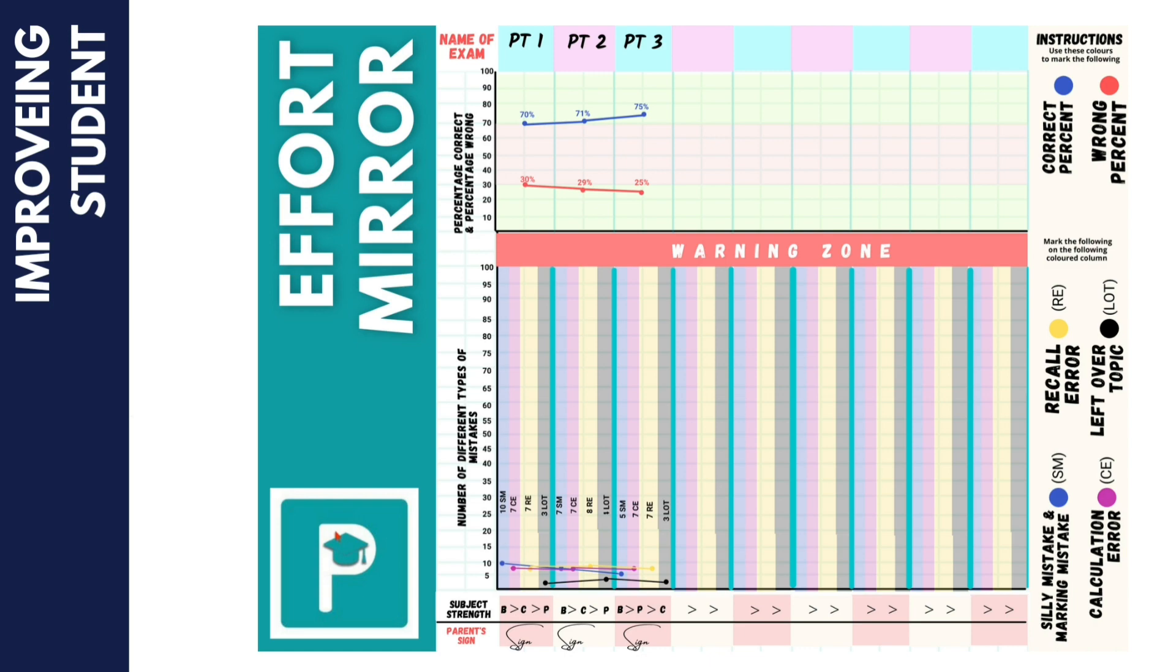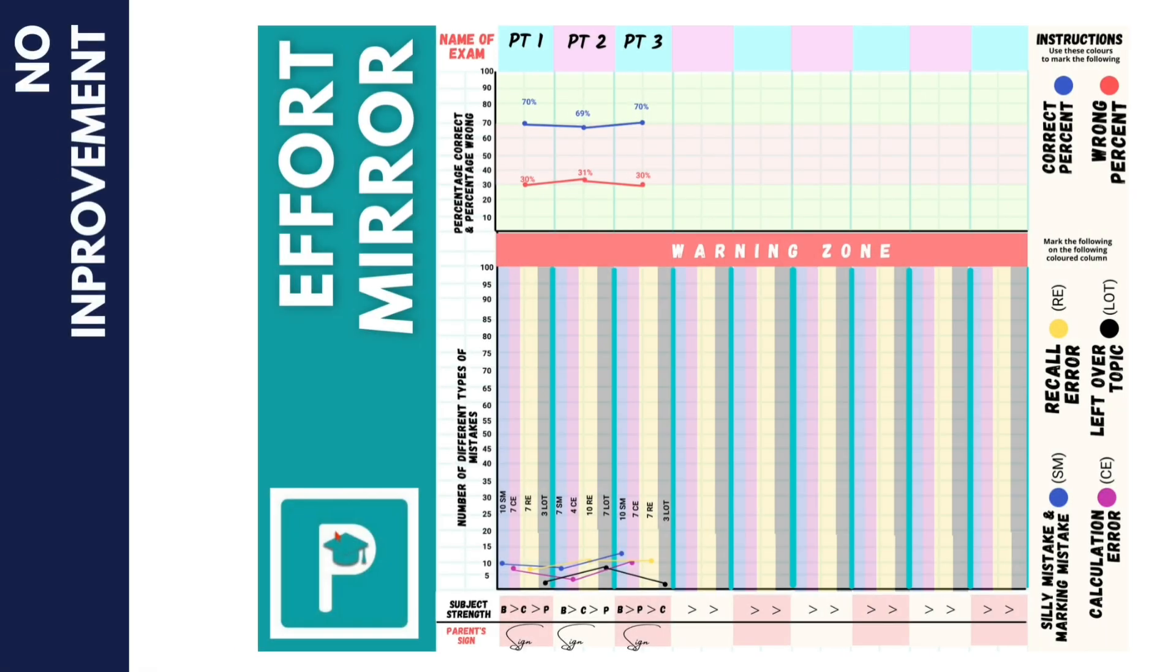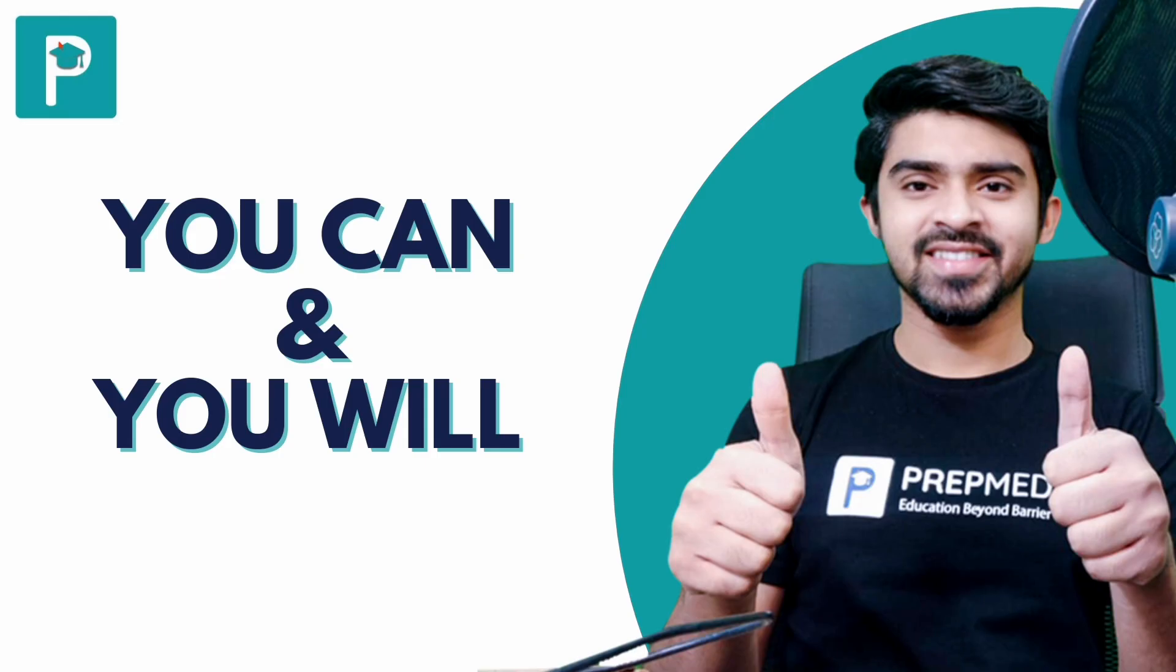Lastly, we have created three slides as examples where we have shown the performances of three students. The first student being one where the student has been improving with each exam, the second student who has not shown any improvement, and the third and last one where the performance has deteriorated. So students, keep the performance soaring high and rise and shine. Thank you.